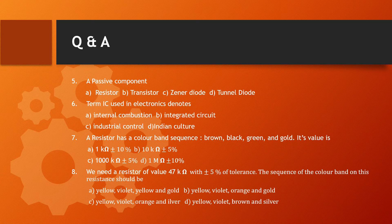Next, question number 5: Identify a passive component. Option A is resistor, Option B is transistor, Option C is zener diode, Option D is tunnel diode. The passive component is resistor — Option A — because transistors and diodes are active components.